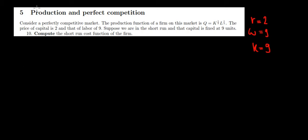Let's have a look at question 5 now. So we have a perfectly competitive market. Now the production function is given by the following function. The price of capital, which is the interest, is equal to 2 euros and the price of labor, which is the wage, is equal to 9 euros. So suppose we're in the short run and capital is fixed at 9 units, what's going to be the short run cost function of this firm?